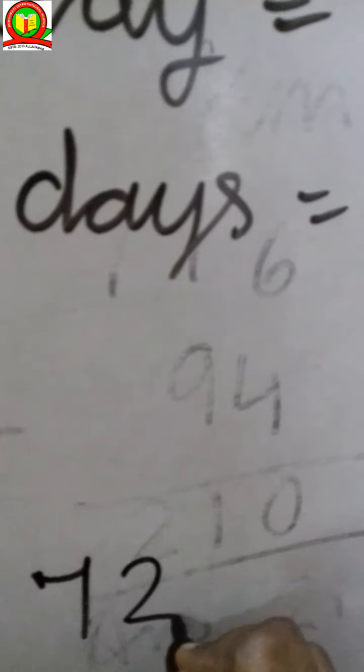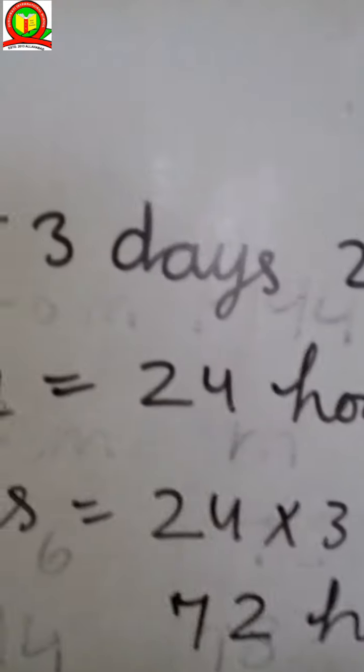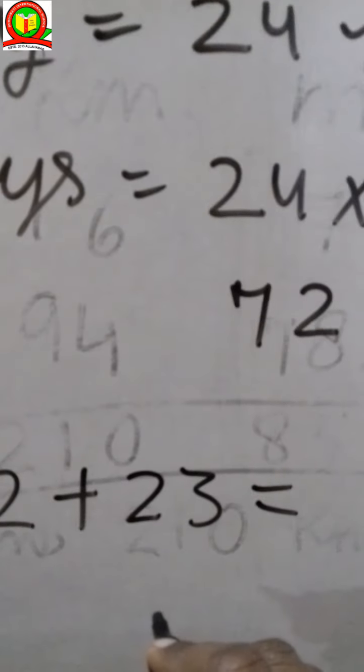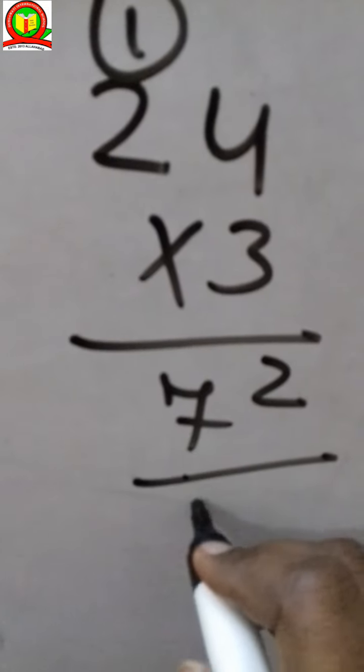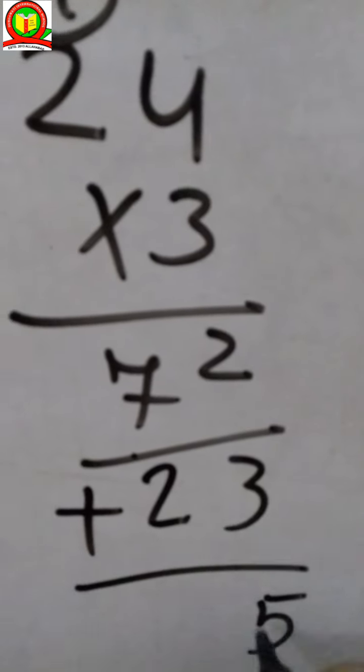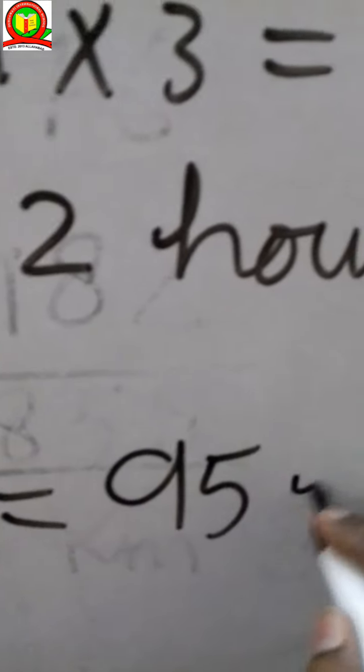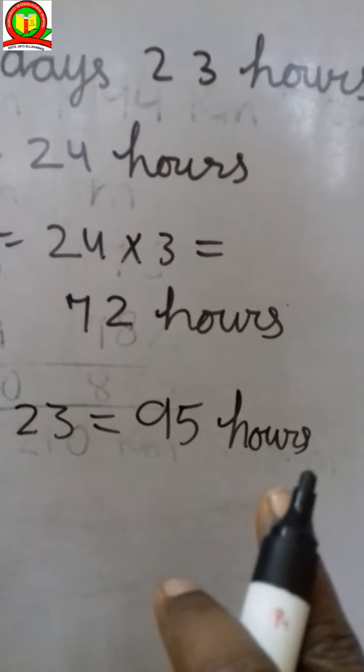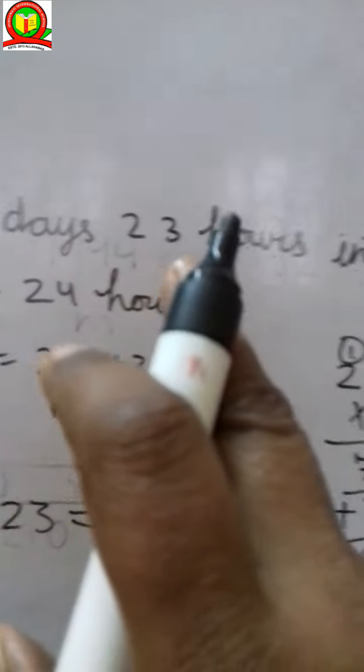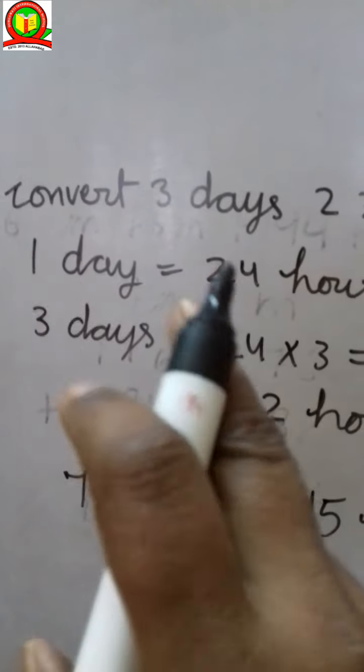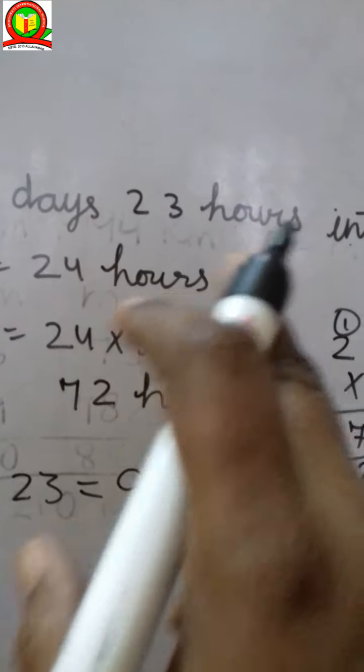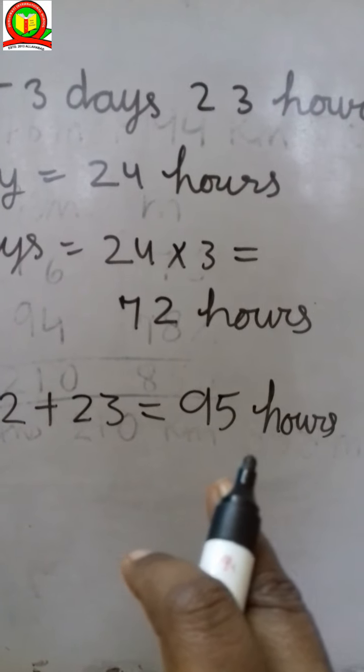Now we have already 72 hours we can get. And now in the question, 3 days, 23 hours. 23 hours we already have, so 23 hours equals 72 plus 23. Now 72 plus 23, how much we have? It's 5 and 9, it's 95. We have 95 hours. 72 plus 23 is equal to 95 hours. We have to convert days and hours into hours. We have to put the days into hours, convert and then plus all the hours left. We have 95 hours.